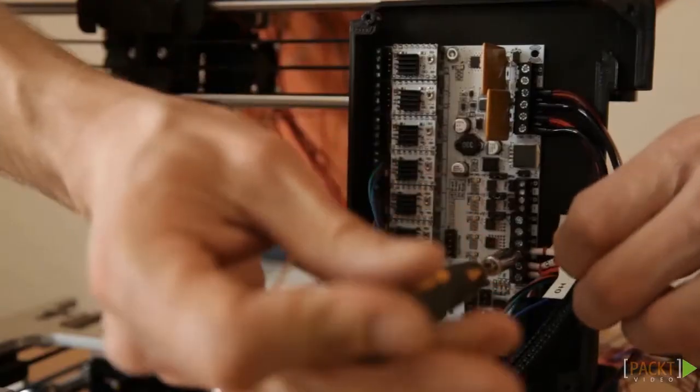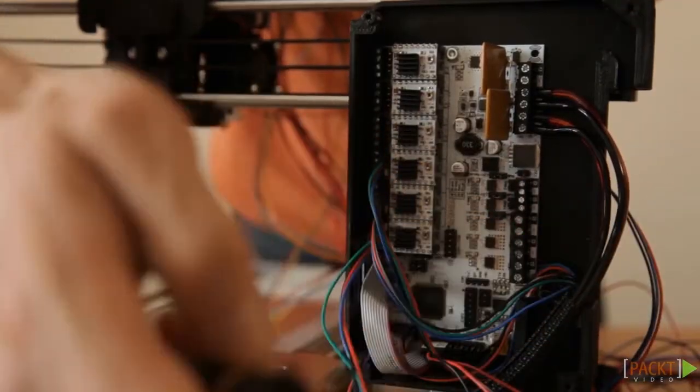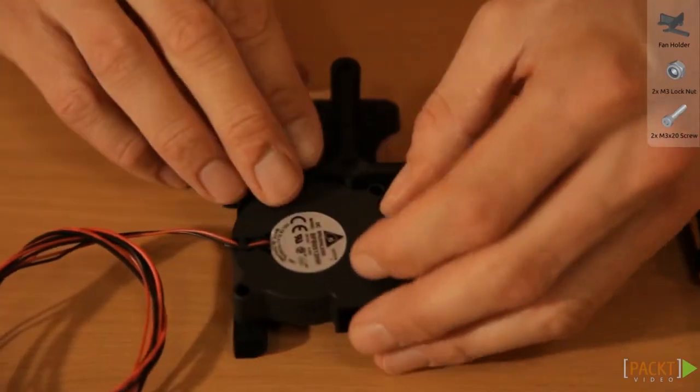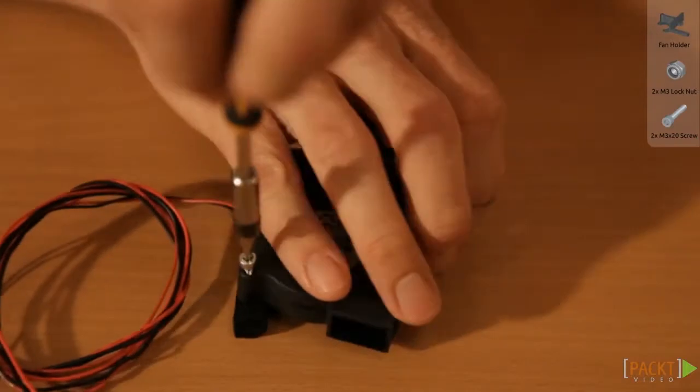In the meantime, you can disconnect the extruder again. Prepare the fan holder by putting in two M3 lock nuts. Mount the radial fan to it with two M3 x 20 screws.